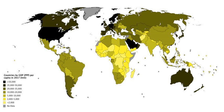GDP can be determined in three ways, all of which should, in principle, give the same result. They are the production approach, the income approach, or the expenditure approach. The most direct of the three is the production approach, which sums the outputs of every class of enterprise to arrive at the total.